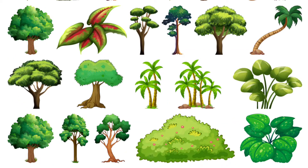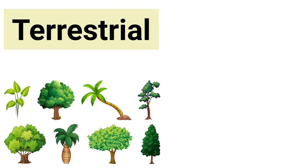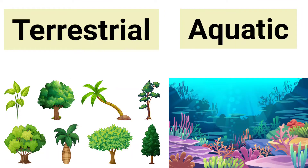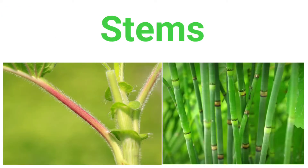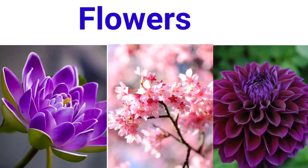We see a huge variety of plants all around us, among which few are terrestrial and aquatic plants. Despite this fact, they all have the same parts and the same functions. They appear unique with different types of roots, stems, leaves, flowers, fruits, seeds, etc.